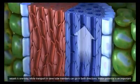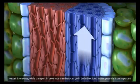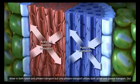Water movement in vessels is one way, while transport in sieve tube members can go in both directions. Water potential is an important driver in both xylem and phloem transport. But only phloem transport utilizes both active and passive transport.